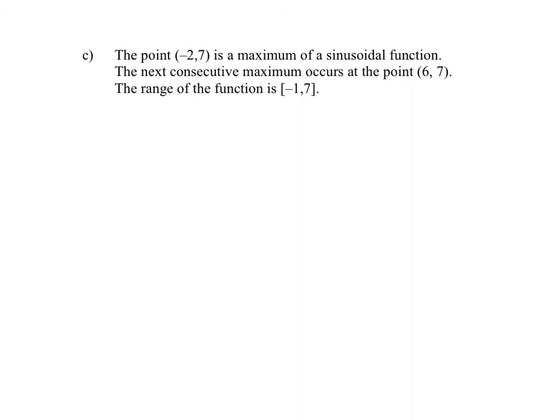The next one you should try yourself. To get started, the maximum is at the point (negative 2, 7), so plot that point. The next maximum would be at (6, 7). They also gave you the range — the difference between the maximum and minimum — which means your minimum would have to be negative 1. Give it a try and I'll move on to the next page.